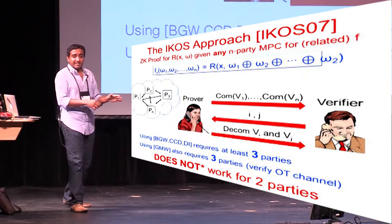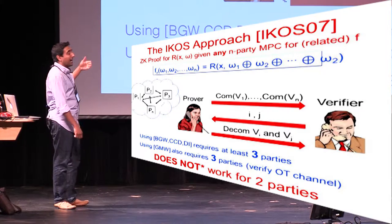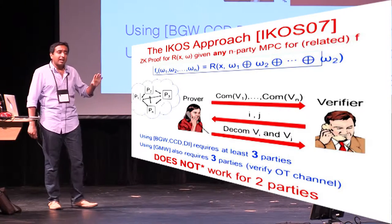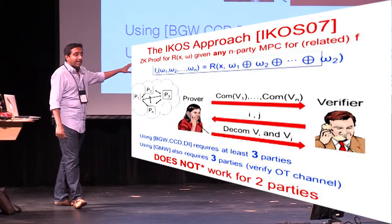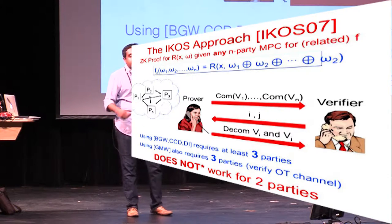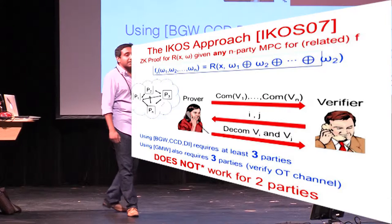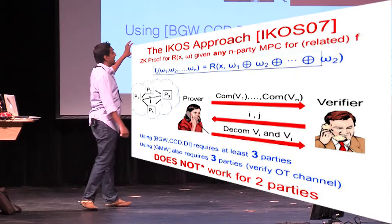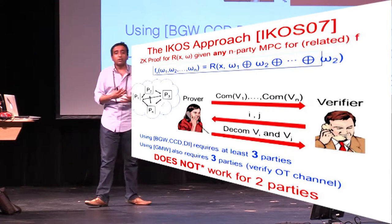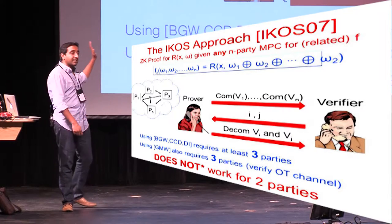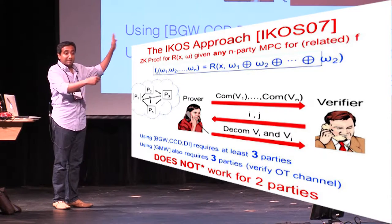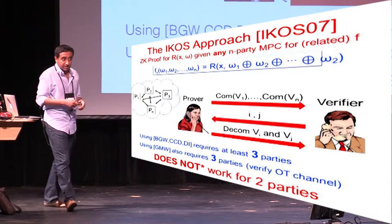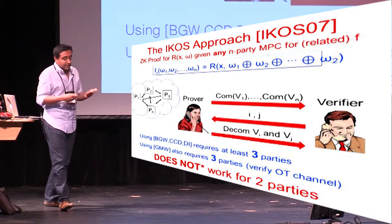There is also an instantiation based on GMW, and as written in the work, this also requires three parties, because GMW is in the OT hybrid, and to ensure consistency of how the OT channels are used, they need to open two views — so they need at least three parties for privacy. In the very next talk you'll see how this can be extended to also work for two parties in the OT hybrid. However, the remaining two results — delayed inputness and adaptive zero-knowledge — cannot be cast in this framework. Roughly speaking, when the prover commits to all the views, it binds everything: the statement, the witness. If you use statistically binding commitments, it's literally bound to the first message and you can't get any delayed input.